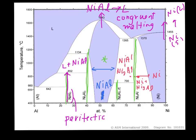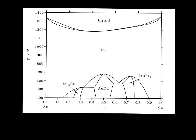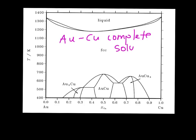Our last phase diagram feature is the order-disorder transformation. This is the gold-copper phase diagram. Gold and copper form a liquid at high temperature, and at somewhat lower temperatures they form an enormous single-phase FCC region. Copper and gold show complete solubility — you can make an alloy of any composition in this region without finding any phase separation. Both are FCC elements, which is why this happens.